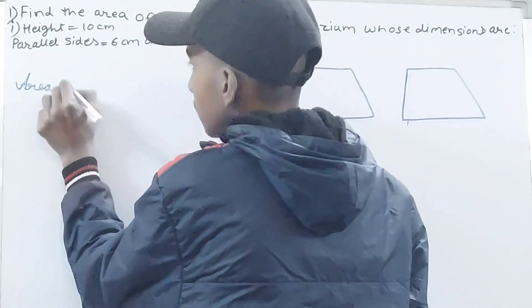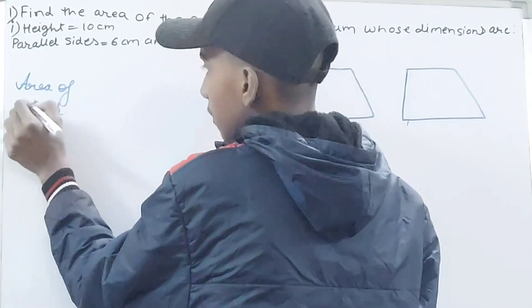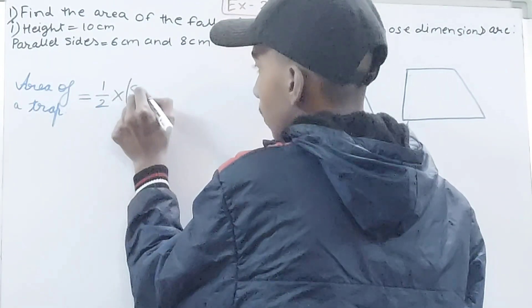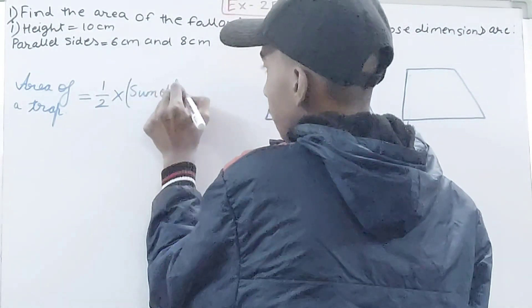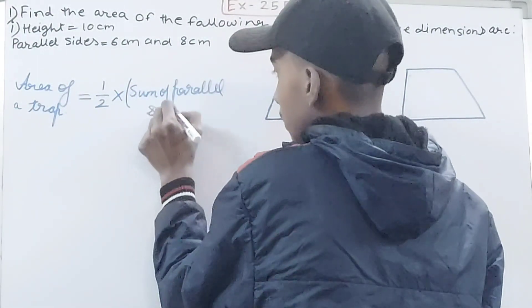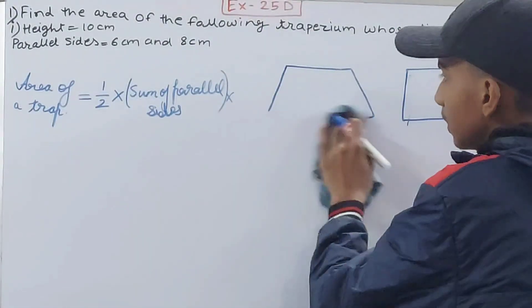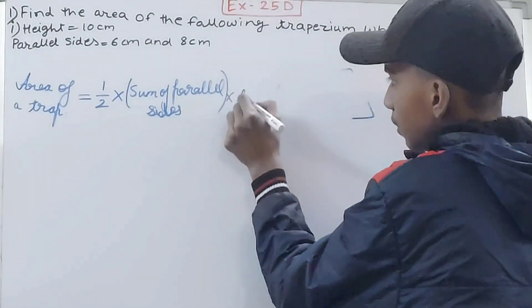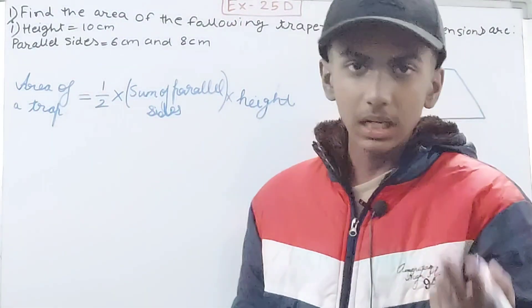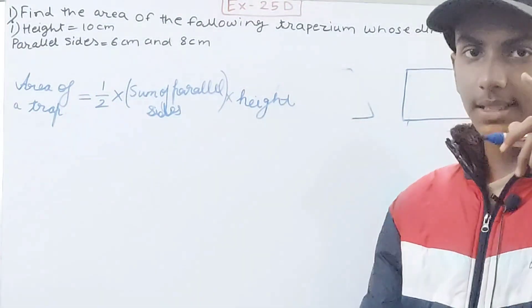Let's come back. We have to calculate the area of the trapezium. So area of a trapezium, we're going to do 1/2 into sum of parallel sides and multiply this by your height. So multiply this by height. Two things we need, or I should say three things we need. First is the sum of the parallel sides.